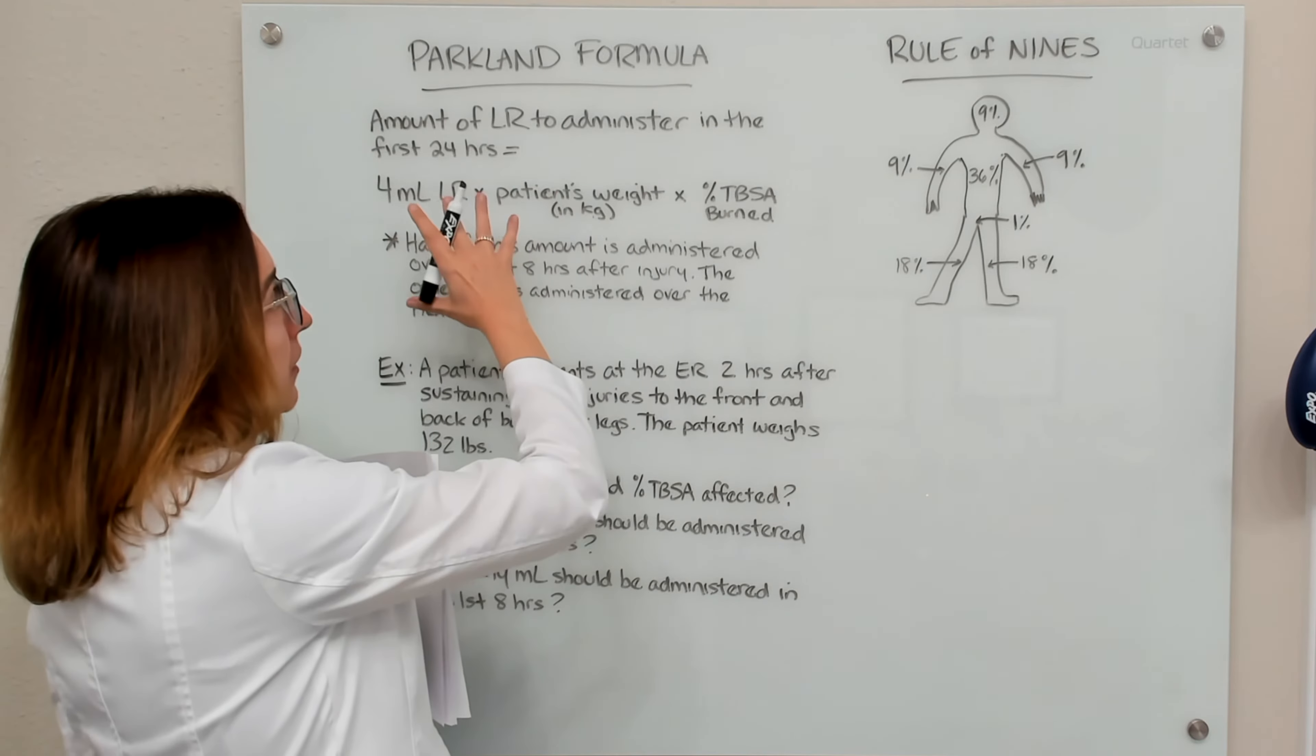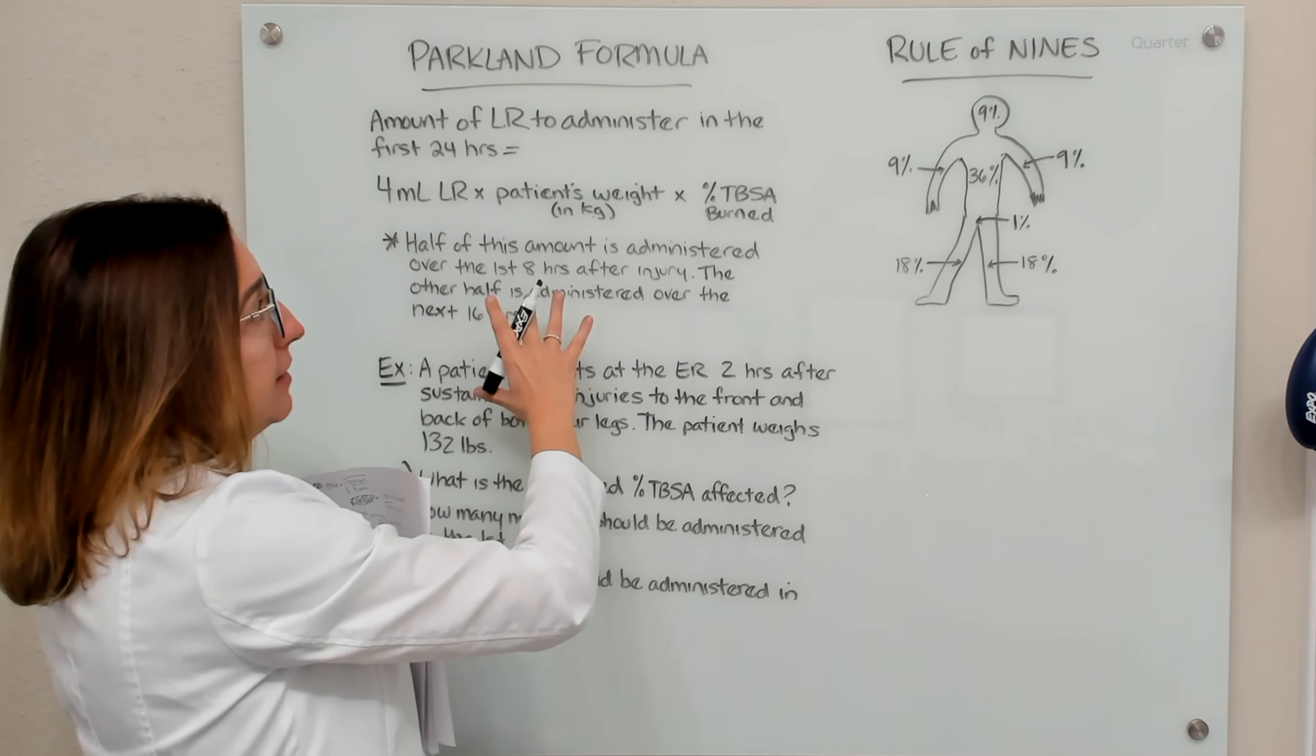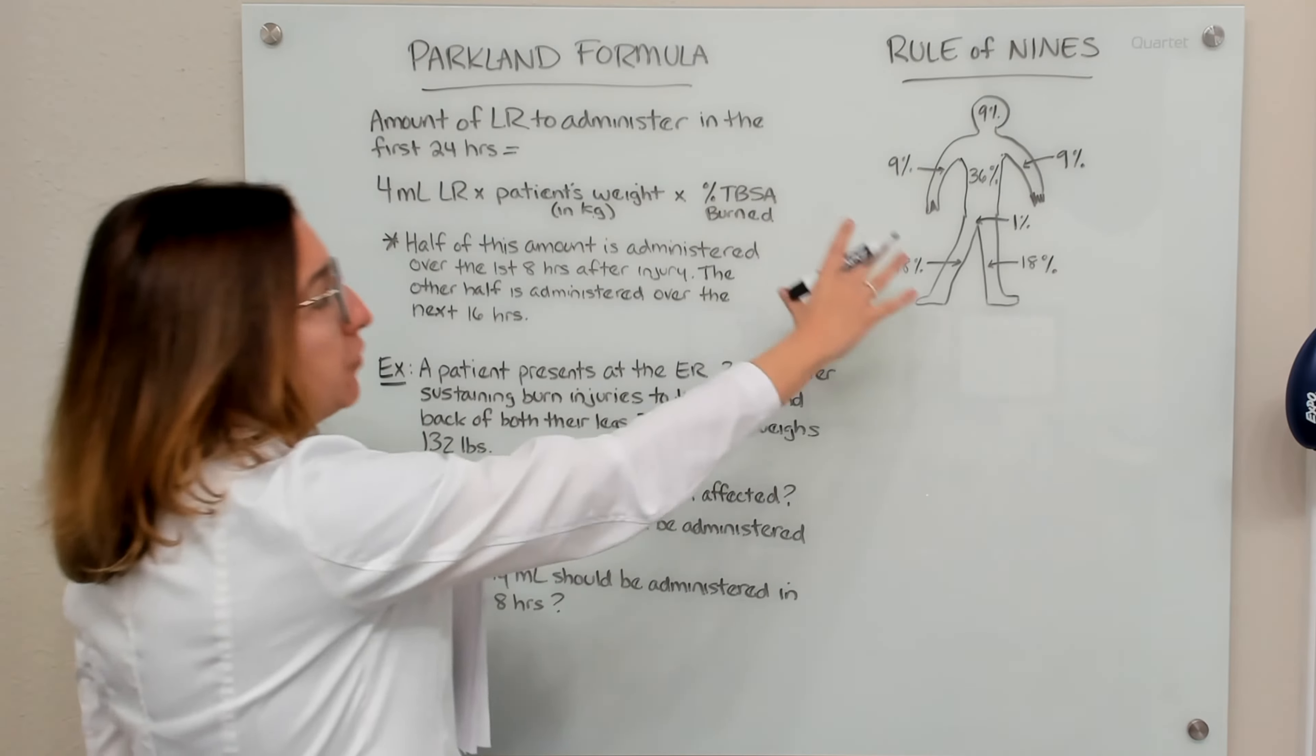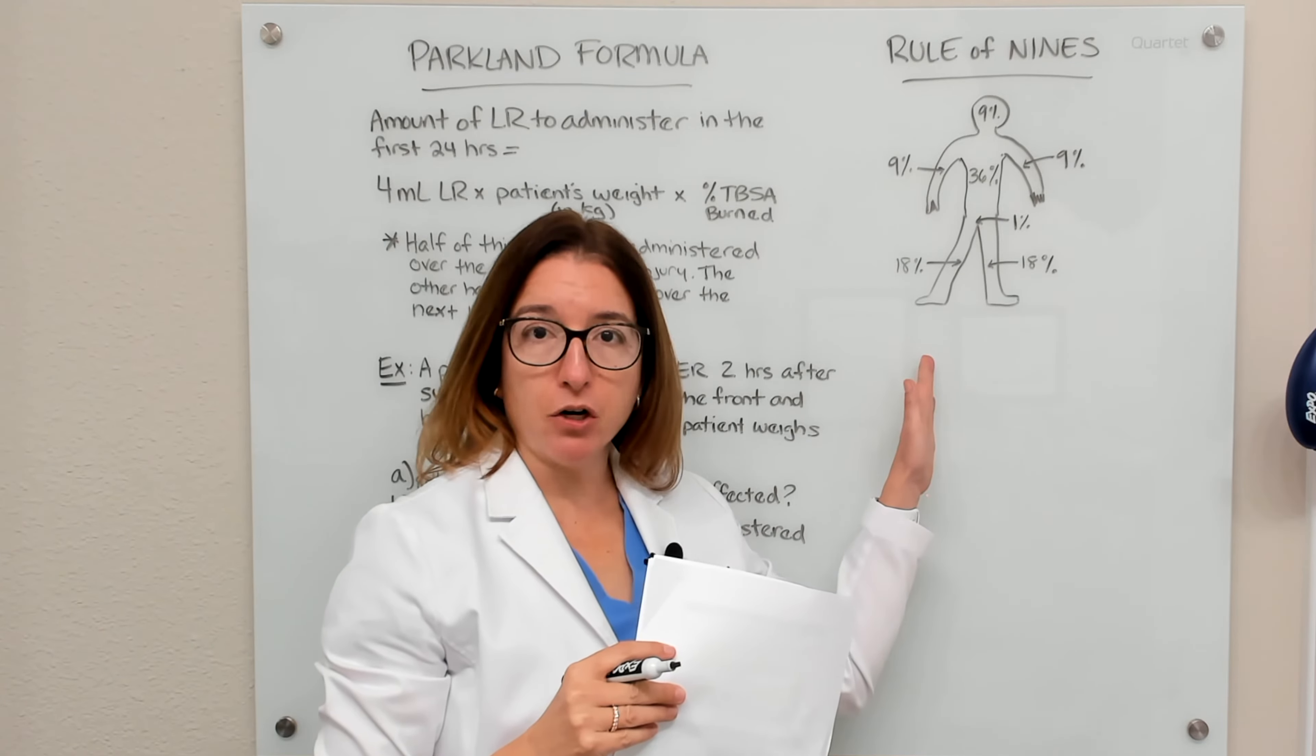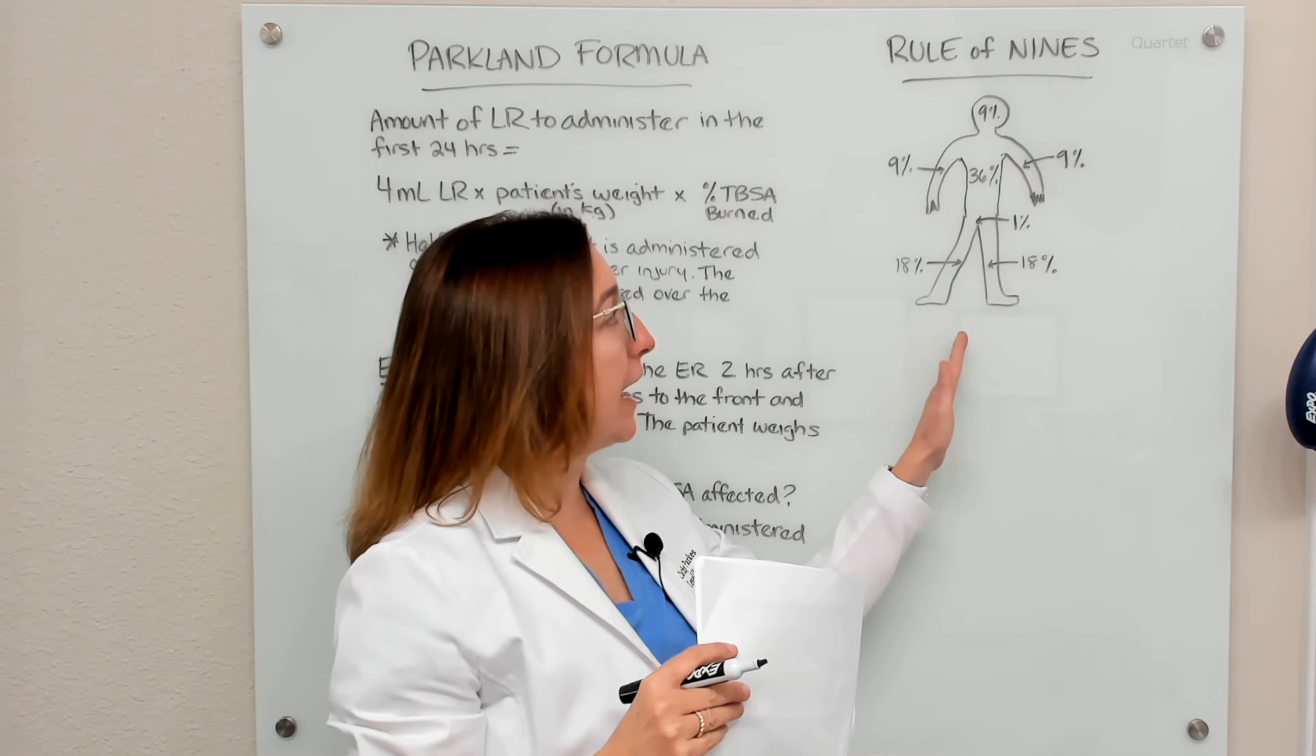which can be quite a lot. So we'll use the Parkland formula to estimate the fluids after we get the percentage of total body surface area that is affected by the burn using the Rule of Nines.